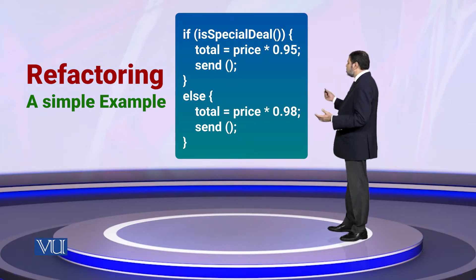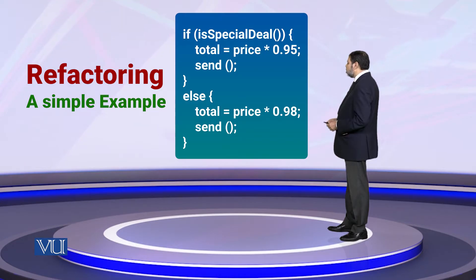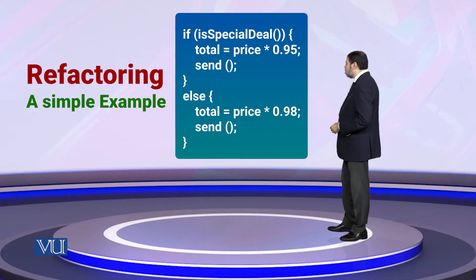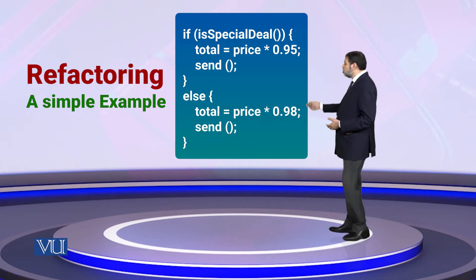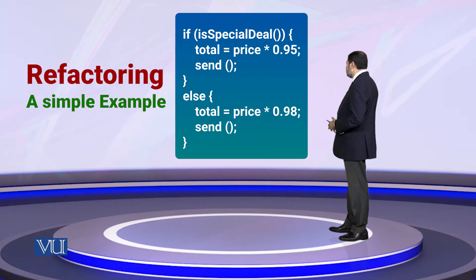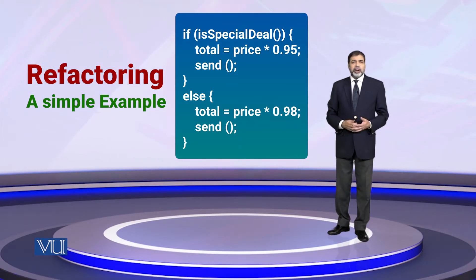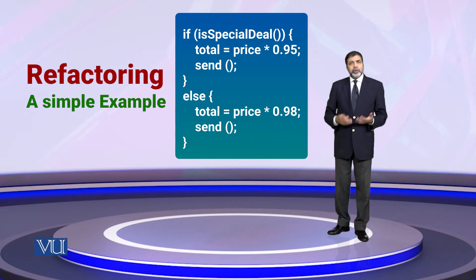Let us look at this piece of code. You can see there is a simple if-then-else kind of statement. The condition is: if there is a special discount or a special deal available, then the total price is 95% — that is, a 5% discount.